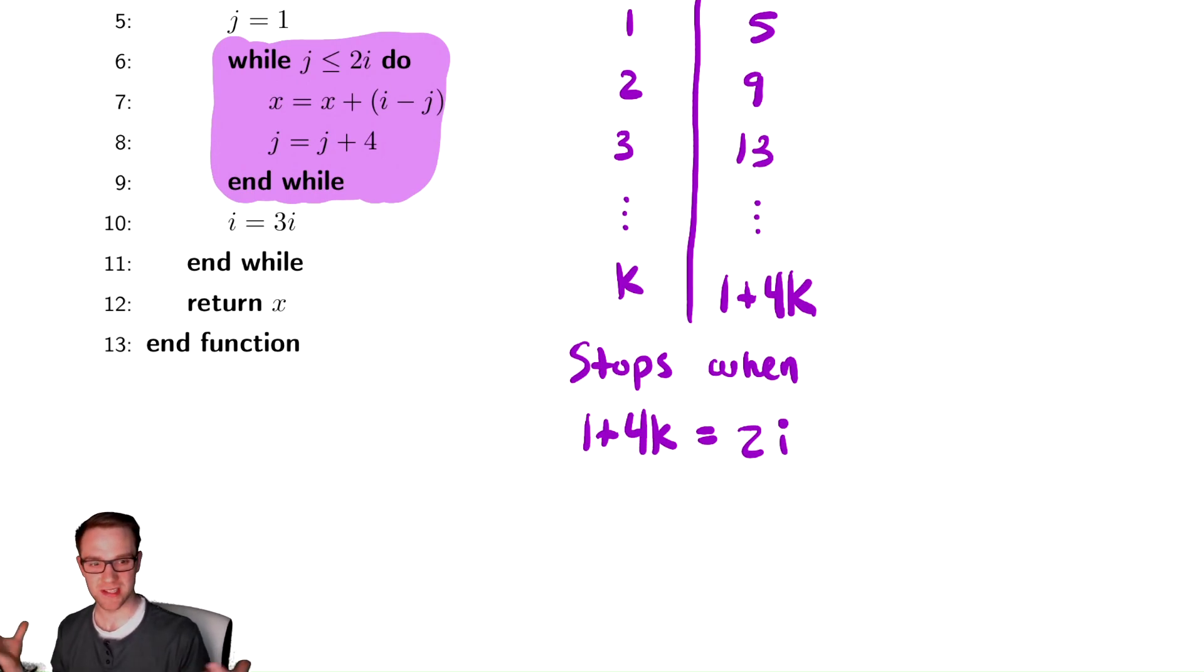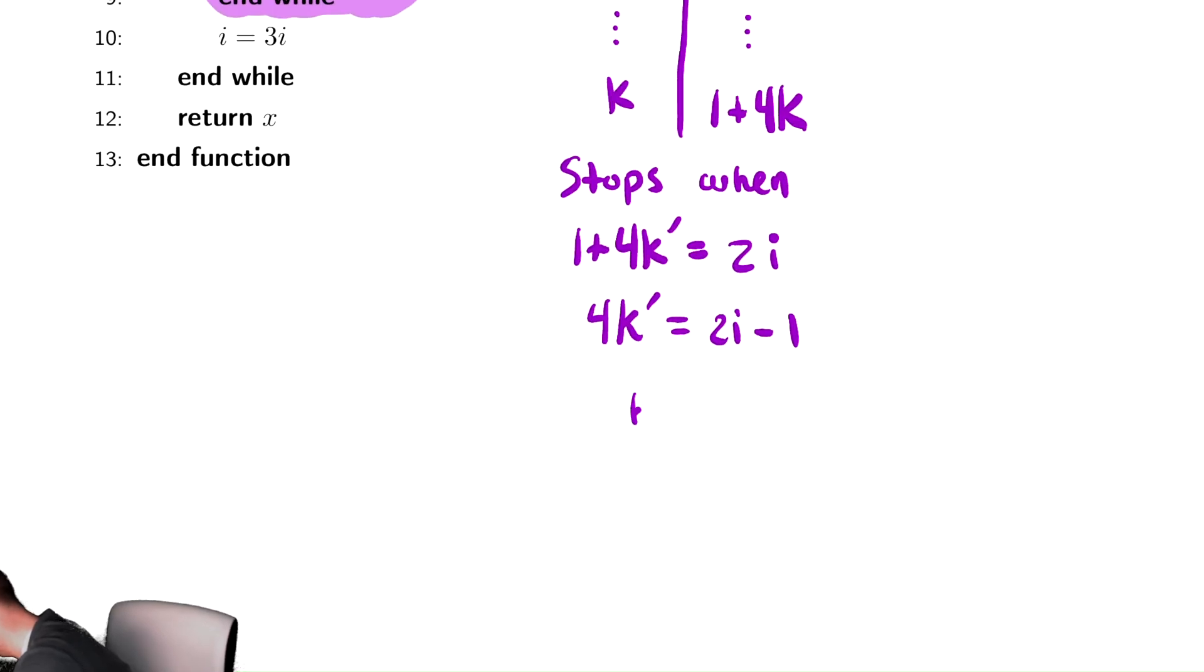And remember what we did before, we wanted to specially signify this value of K, so we called it K prime. So let's do that here. We solve that for K prime. So we subtract one from both sides. We have four K prime is equal to two I minus one, then divide by four. And we have K prime equals two I minus one, all divided by four.